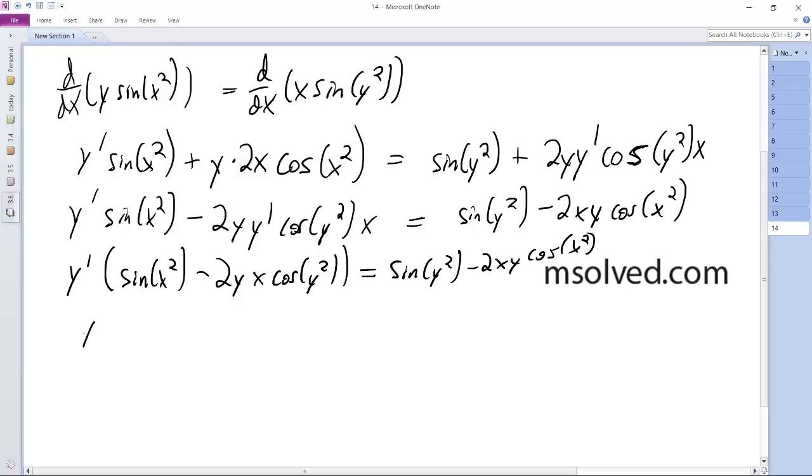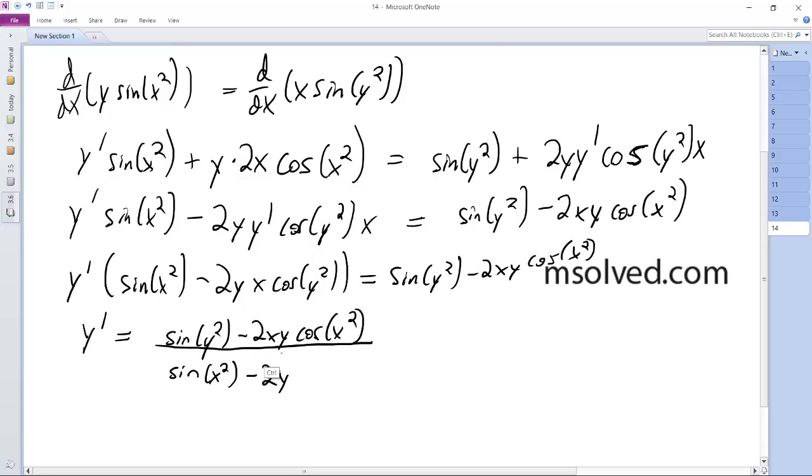I end up with y prime is equal to sine of y squared minus 2xy cosine of x squared, all divided by sine of x squared minus 2y x, or xy cosine of y squared. That's it. That'll pull you back.